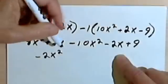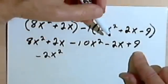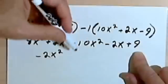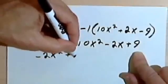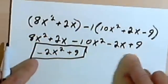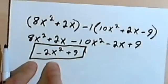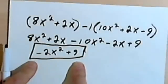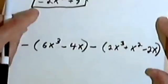And now going down to my constant, I've only got one constant, which is the 9. So this thing simplifies down pretty nicely to -2x² + 9. One more.